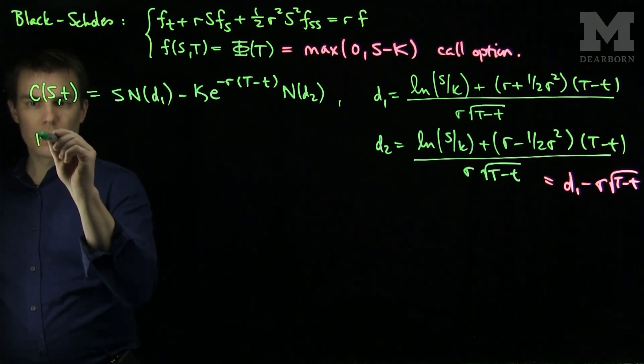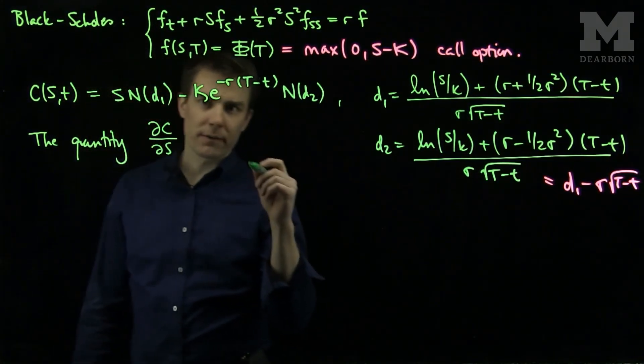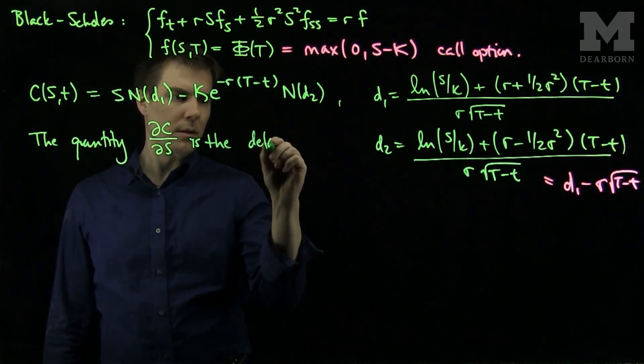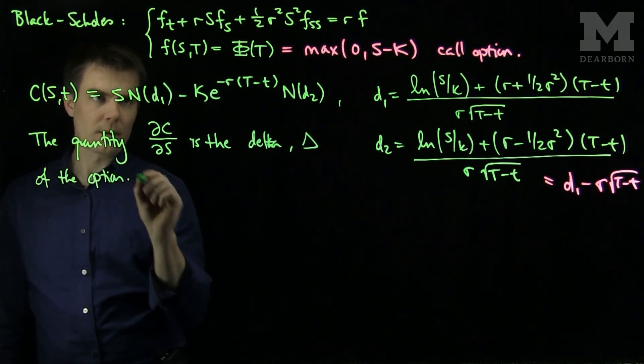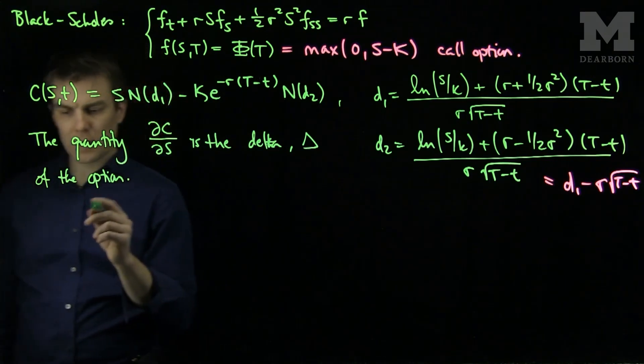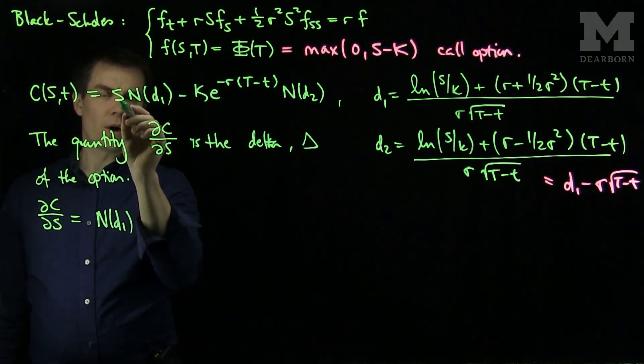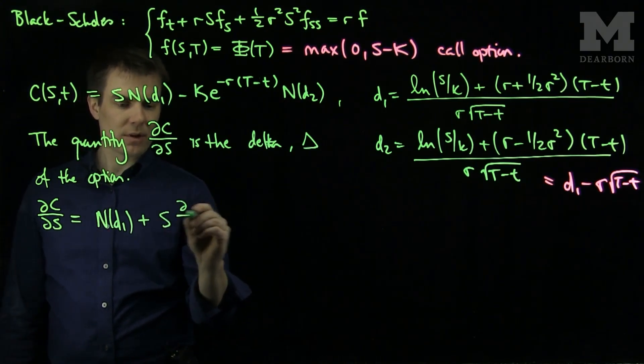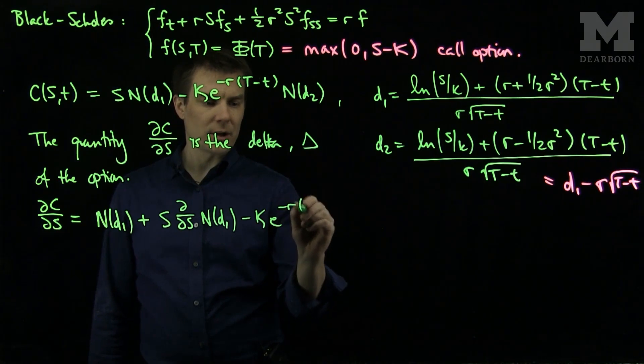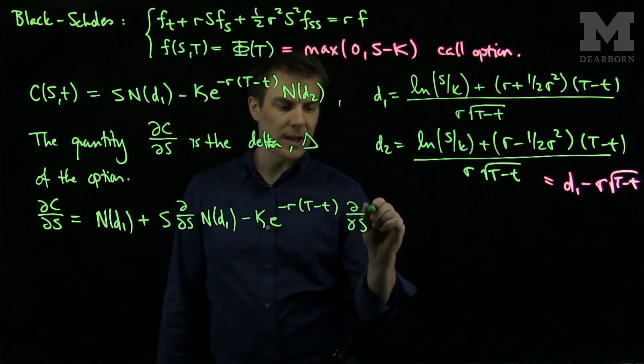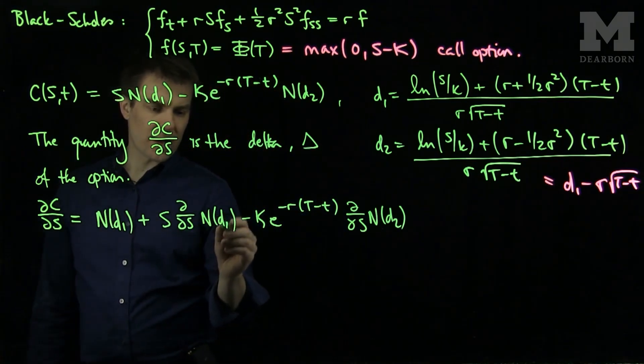Note the quantity ∂C/∂S is referred to as the delta of the option. To compute ∂C/∂S, we'll have to use the chain rule carefully. So ∂C/∂S equals N(D1) plus S times the derivative with respect to S of N(D1) minus K e^(-r(T-t)) times the derivative with respect to S of N(D2). Now, we'll make the following observation.